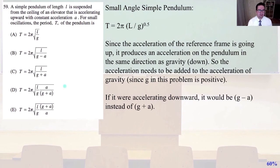59. A simple pendulum of length L is suspended from the ceiling of an elevator that is accelerating upward with constant acceleration A. For small oscillations, the period T of the pendulum is... The small angle simple pendulum T equals 2 pi times the square root of the length divided by g, g being the acceleration of gravity. Since the acceleration of the reference frame is going up, it produces an acceleration on the pendulum in the same direction as gravity, which is down. So, the acceleration needs to be added to the acceleration of gravity since g in this problem is positive. Just as a note, if it were accelerating downwards, it would be g minus A instead of g plus A. And so, in our case, the answer to number 59 is going to be C.